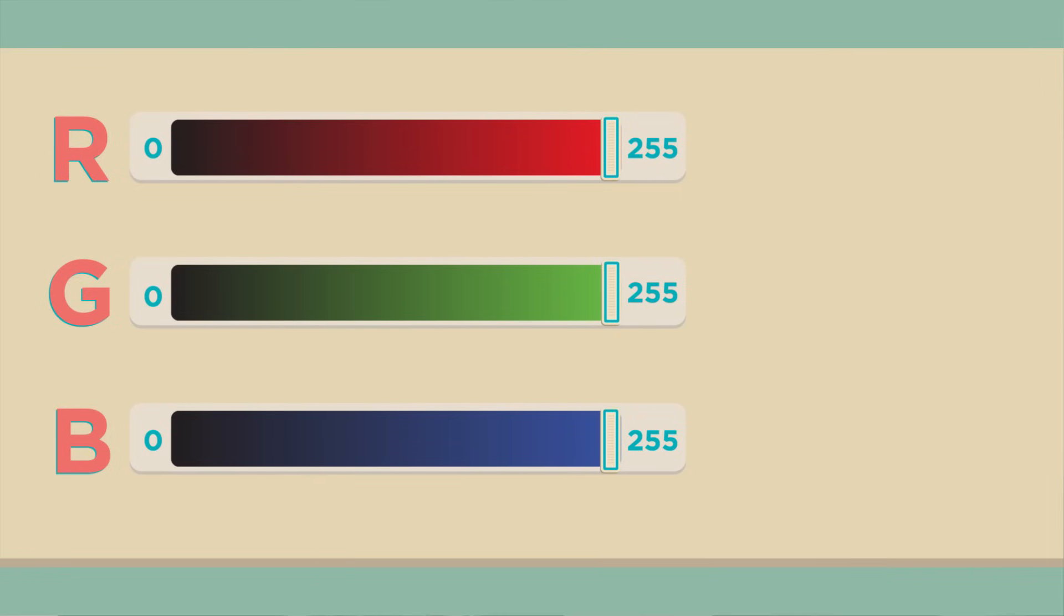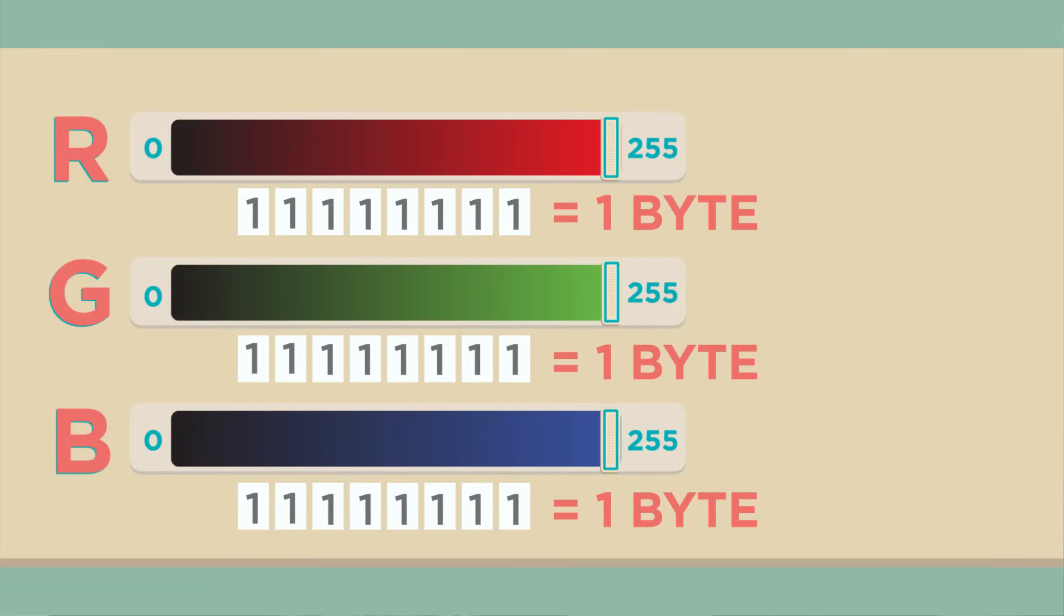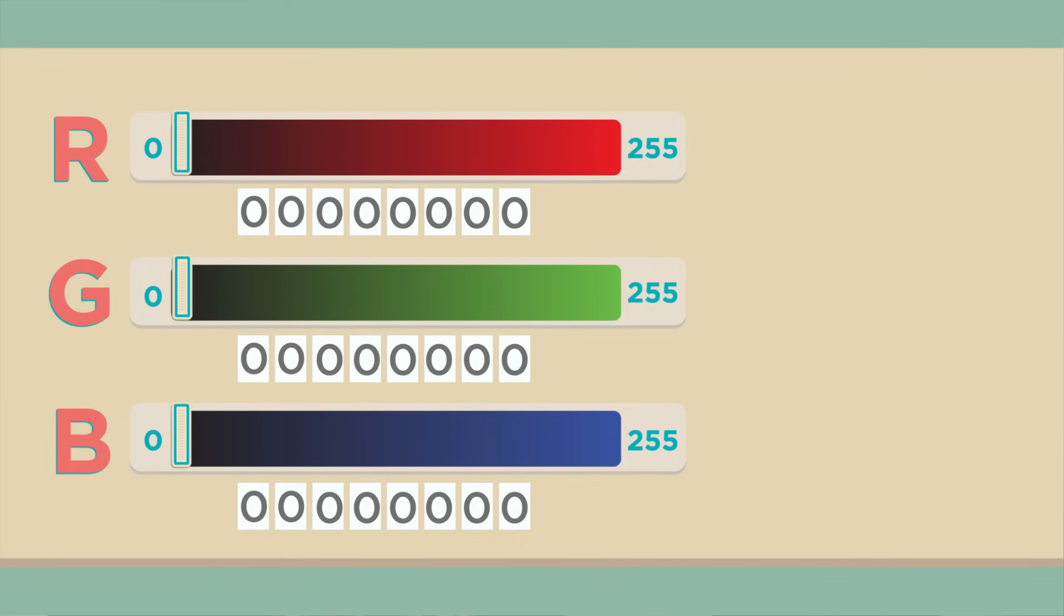Why do RGB values go from 0 to 255? Turns out that each color channel (RGB) is represented by eight bits, which together are called a byte. If you know the binary number system, you know that the maximum number eight bits can represent is 255, which is equal to eight ones in a row, and the lowest is zero, or eight zeros in a row.